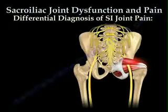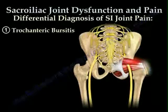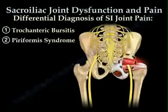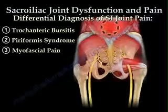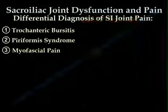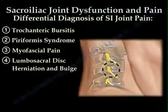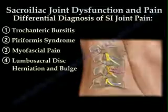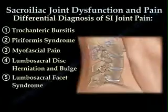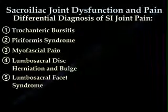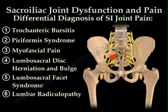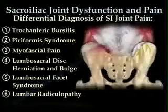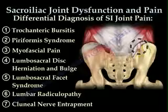Differential diagnosis of SI joint pain includes trochanteric bursitis, piriformis syndrome, myofascial pain, lumbosacral disc herniation and bulge, lumbosacral facet syndrome, lumbar radiculopathy, and clunial nerve entrapment.